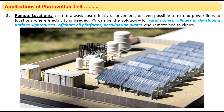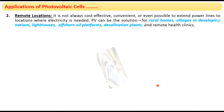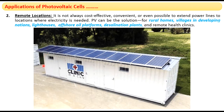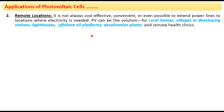The next application is desalination plants. For purifying water, we use desalination plants, and a number of solar panels supply power to them since power is required at all times. Another application is health clinics in remote areas where electricity through power lines is impossible. Their clinics run with power supplied by photovoltaic cells, with solar panels fitted on the roof.